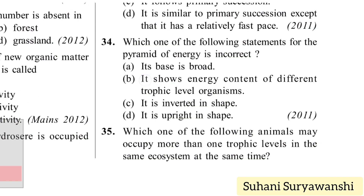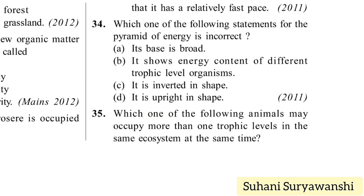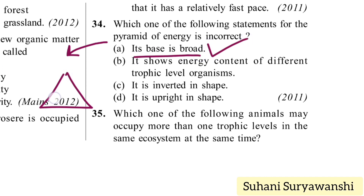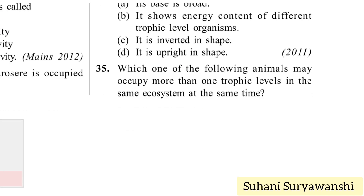Which one of the following statements for the pyramid of energy is incorrect? Its base is broad — correct. It shows energy content of different trophic level organisms — correct. It is inverted in shape — this is incorrect, because the pyramid of energy is always upright, never inverted. So option C is the incorrect statement.